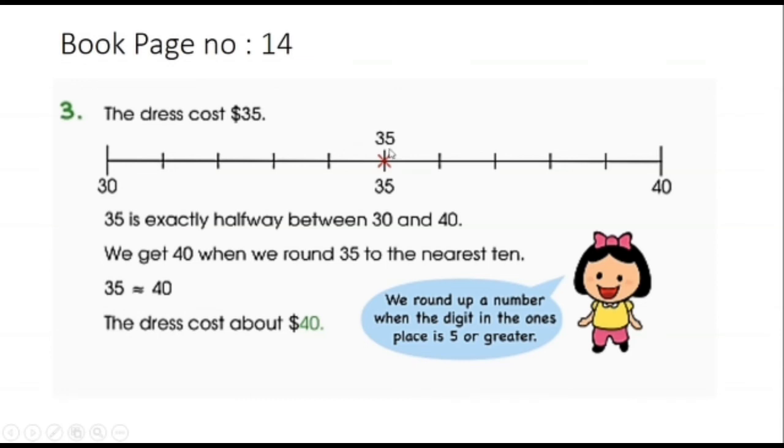Now I told you that if you have to look at ones place, once place peh agar aapka number five ya five se greater hai, you will always round up. So you have a five here. That's why we will round off this 35 to 40. So it would be 35 is approximately equals to 40. And we round up a number when the digit in ones place is five or greater than five.